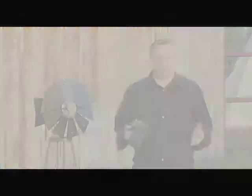For example, the number 2 with quotation marks means that the shutter will be open for two full seconds and not a half of a second. It's very important to know when your camera is set to full seconds and when it's set to fractions of a second.